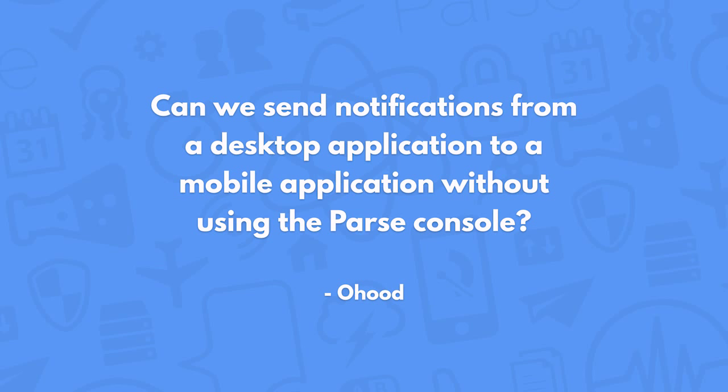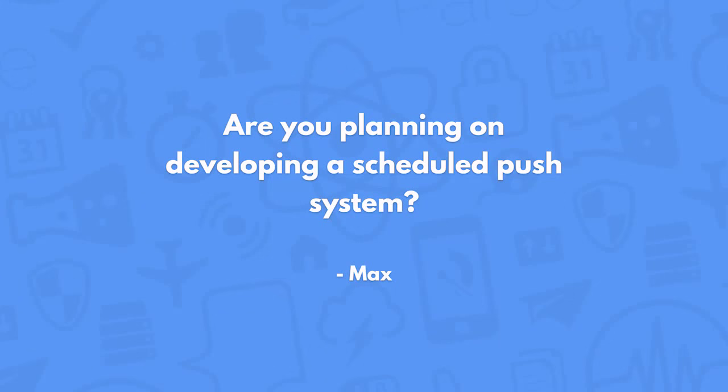Can we send notifications from a desktop application to a mobile application without using the Parse Console? You can definitely do it, and there are basically two approaches. If you want to use the SDK — say on OS X or in JavaScript on the web — you can enable client push in the settings on your Parse app and just use the SDK to send those notifications. The other approach, which is way more secure, is to build the same application but instead of using the SDK, use a master key and a REST API. As for developing a scheduled push system, we don't have any plans right now, but you can simply queue up any pushes into a table on your database and have a background job push those at the scheduled time.